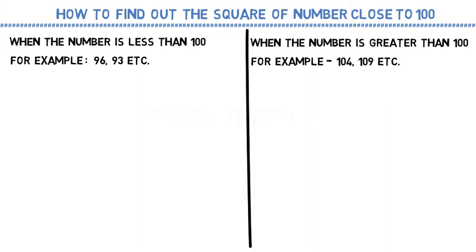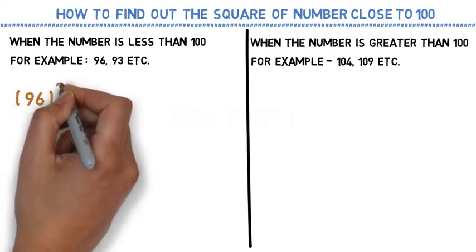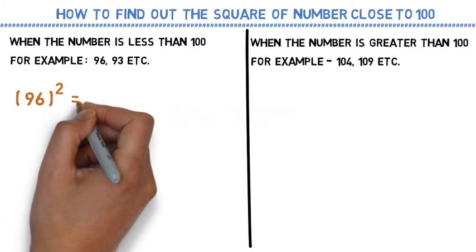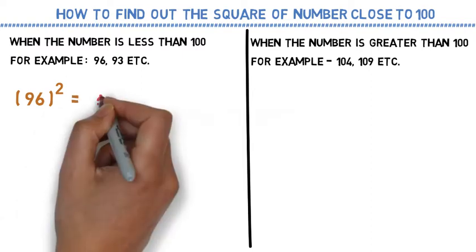Let's try to understand the first case first. Suppose we want to find out the square of 96. This is gonna be a 2-step process.